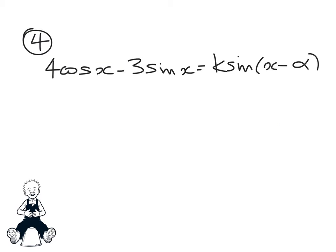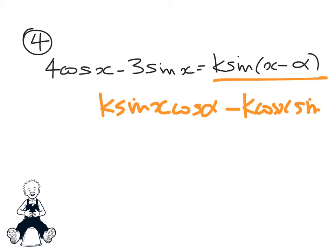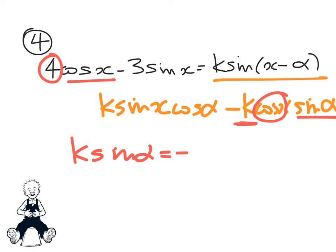Question 4. Here's the expansion we've got to use this time. So that's going to be k sin x cos alpha minus k cos x sin alpha. Now looking over here, the 4 is beside the cos x. Here is the cos x, so this part here must be equal to 4. However, we problem, negative sign here not 1 here. So that means that k sin alpha is going to equal negative 4.